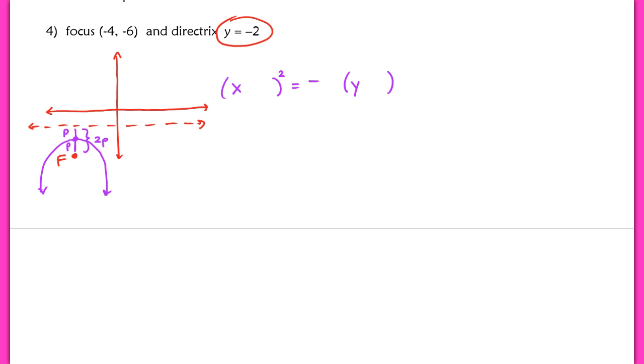So if we look, the equation y equals negative 2, now that's always a y value. Well, the difference between where your focus is at, at y equals negative 6, and the line y equals negative 2, that's a total distance of 4 units.